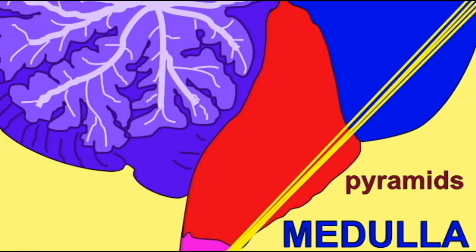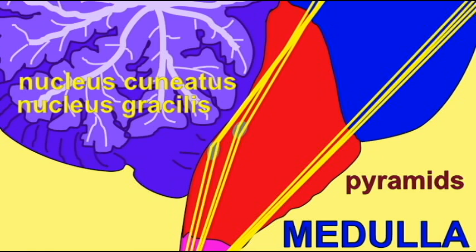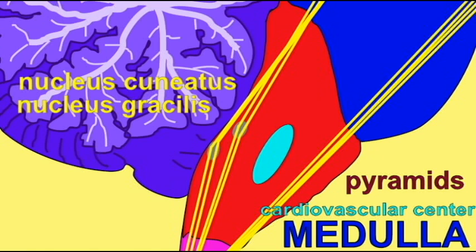Voluntary fibers carrying motor commands from the cerebrum travel through what are known as pyramids, bulges on the anterior surface of the medulla.